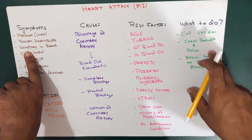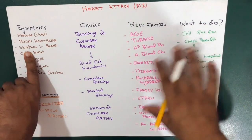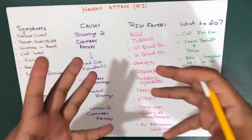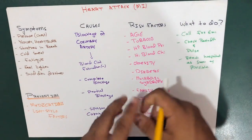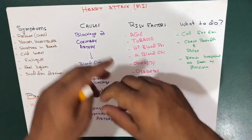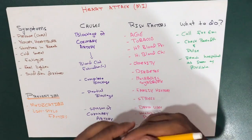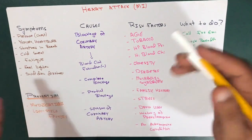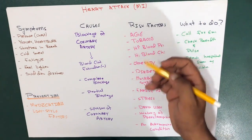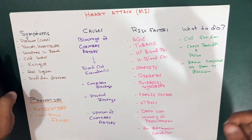A heart attack or myocardial infarction occurs when the flow of blood to the heart is blocked. The blockage is most often a buildup of fat, cholesterol, and other substances that form a plaque in the coronary arteries — the arteries that feed the heart.